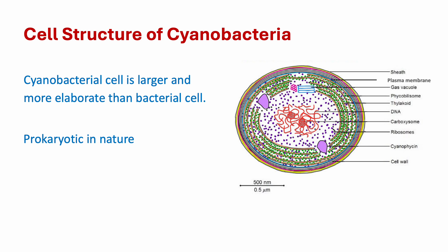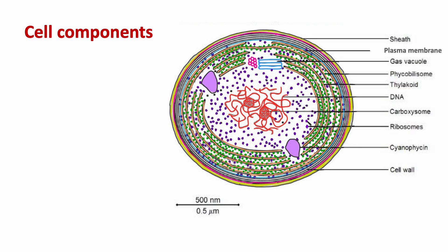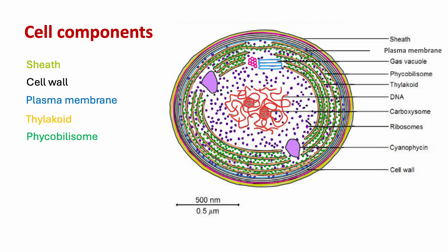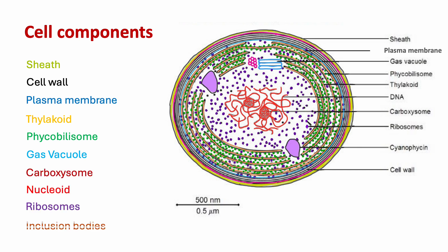Cell structure of cyanobacteria: the cyanobacterial cell is larger and more elaborate than a bacterial cell. Like bacteria, they are also prokaryotic in nature, meaning they don't have a definite nucleus. The cell components of a cyanobacterial cell include: sheath, cell wall, plasma membrane, thylakoids, phycobilisomes, gas vacuoles, carboxysomes, nucleoid, ribosomes, and inclusion bodies.